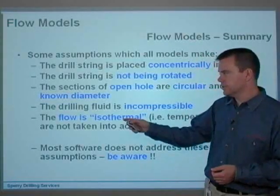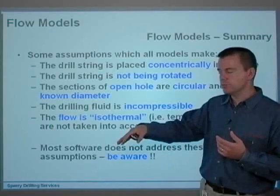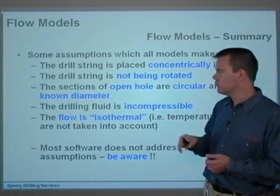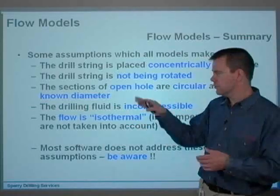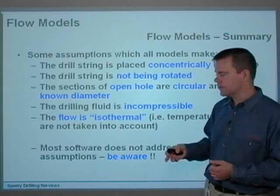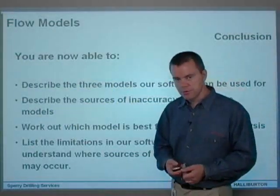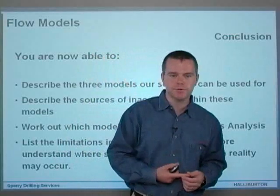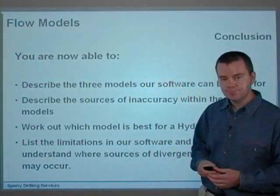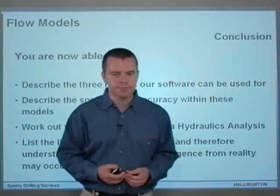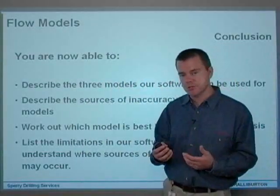Be very aware that these are limitations. As soon as you start rotating the pipe or drilling an angled hole, the pipe is eccentric on one side of the hole, being rotated, and pressure should increase due to rotation. If you know the borehole is out of gauge, that's something else that can affect your results, as can temperature and pressure effects. So now you're able to describe the three main models, describe the sources of inaccuracy within those models, work out which model is best for hydraulics analysis — Herschel Bulkley — and list the limitations in our software to understand where sources of divergence from reality may actually occur.